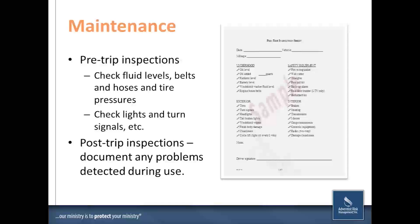The second component is vehicle maintenance. All too often we take for granted that the car will do precisely what we want. We have individuals under our care, custody, and control being assigned responsibility for getting from point A to point B in a church-related activity. We want to be sure we've done everything possible to ensure their safety. One thing we encourage is pre-trip inspections — check your fluid levels, belts, hoses, and tire pressures.